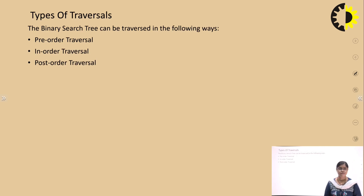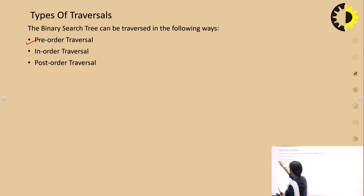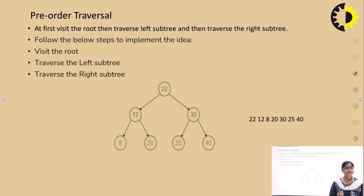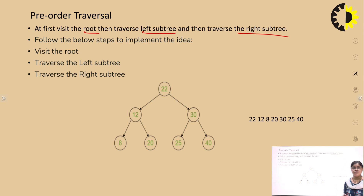Now, the types of traversal: the binary search tree can be traversed in the following ways — preorder, inorder, and postorder. For preorder traversal, we first visit the root, then traverse the left subtree, and then traverse the right subtree.